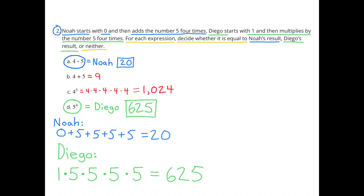A: 4 times 5 equals 20, so that matches Noah's result. B doesn't match Noah or Diego — that equals 9. C doesn't match Noah or Diego — that's the same as 4 times 4 times 4 times 4 times 4, or 4 to the 5th, and that's 1,024, not 20.